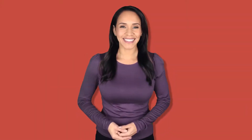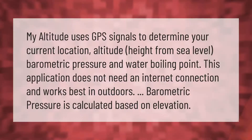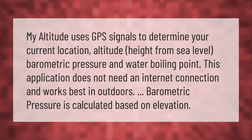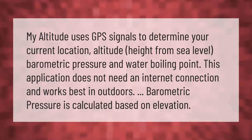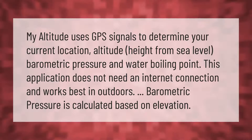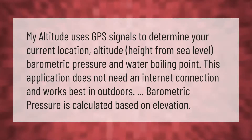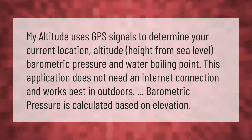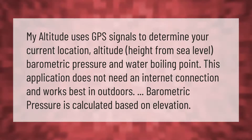My Altitude uses GPS signals to determine your current location, altitude, height from sea level, barometric pressure, and water boiling point. This application does not need an internet connection and works best outdoors. Barometric pressure is calculated based on elevation.